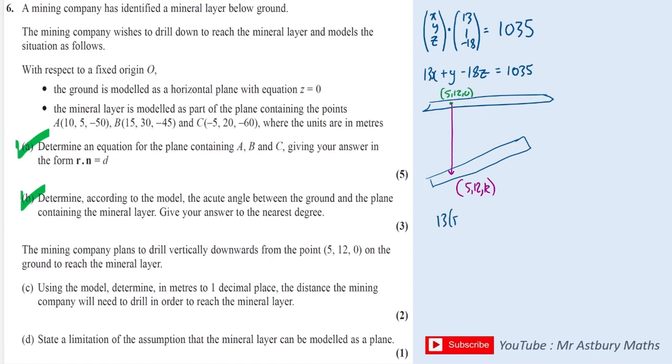And I'll get 13 times 5 plus 1 times 12 minus 18 times K is equal to 1035. 13 times 5 plus 1 times 12 is 77. And then rearranging to solve for K, we get K is equal to -53.2. So if that's the K coordinate or the Z coordinate, and it started at 0 and it's gone down to -53.2, it must have traveled a distance of 53.2 meters.